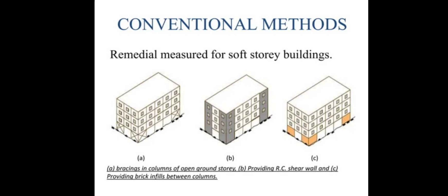Remedial measures for soft storey buildings include: bracing in columns of the open ground storey. Figure A consists of bracings in columns of the open ground storey, Figure B consists of providing RC shear walls, and the third figure consists of brick infills between columns. These are the methods used against earthquakes.